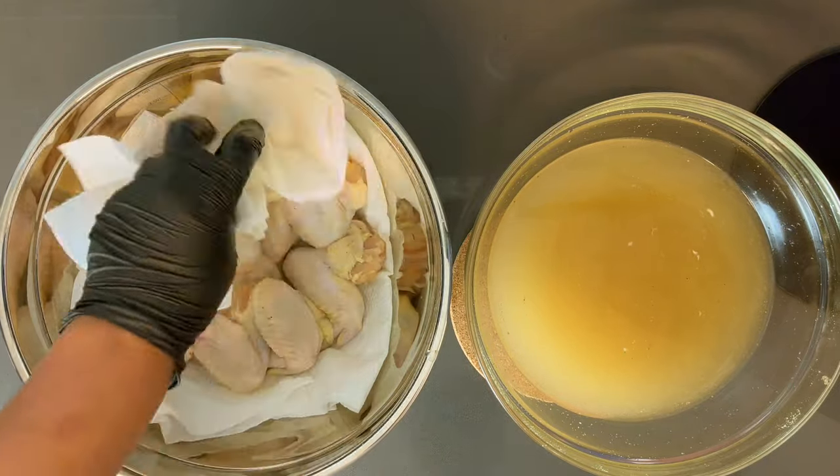Now we're going to move on to making our binding mix. I got a few eggs, some whole milk - you can use buttermilk if you want, I just prefer whole milk - and I have some hot sauce. For those of you who think the hot sauce is going to make the chicken hot, it's not, it's just flavor. Get that mixed up.